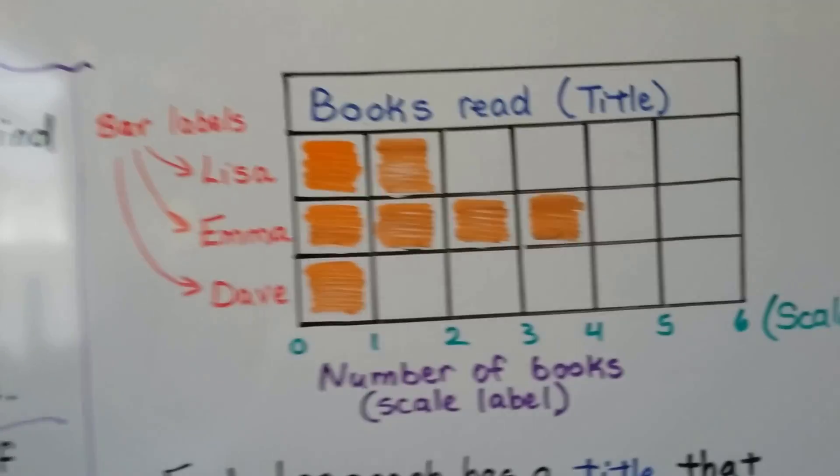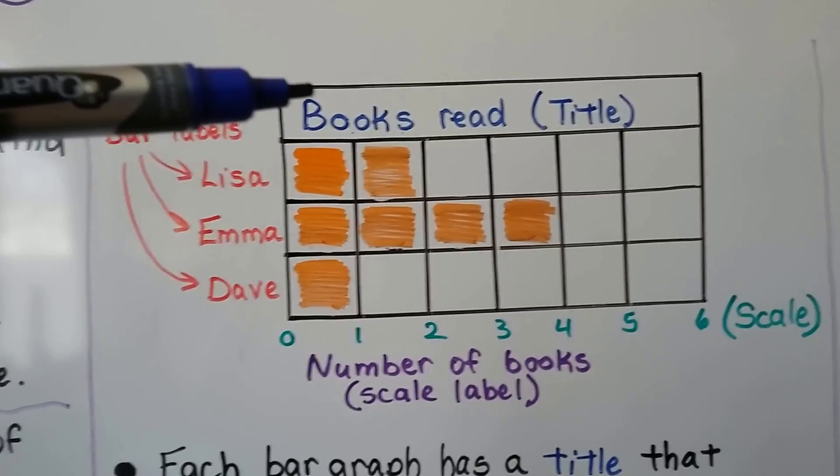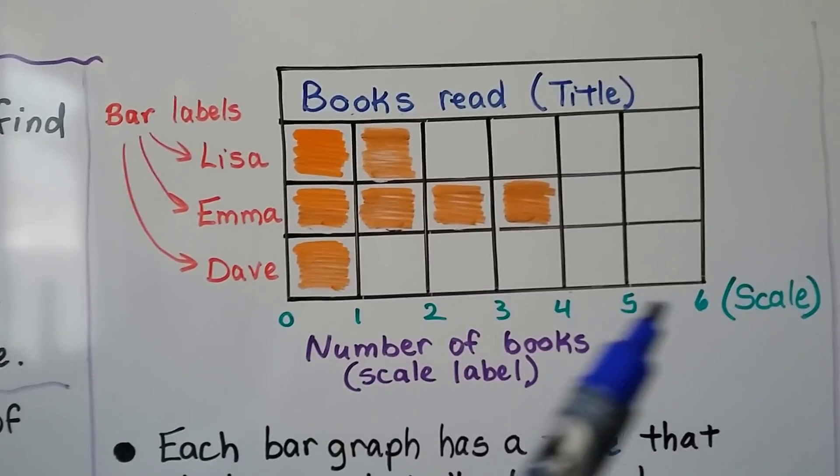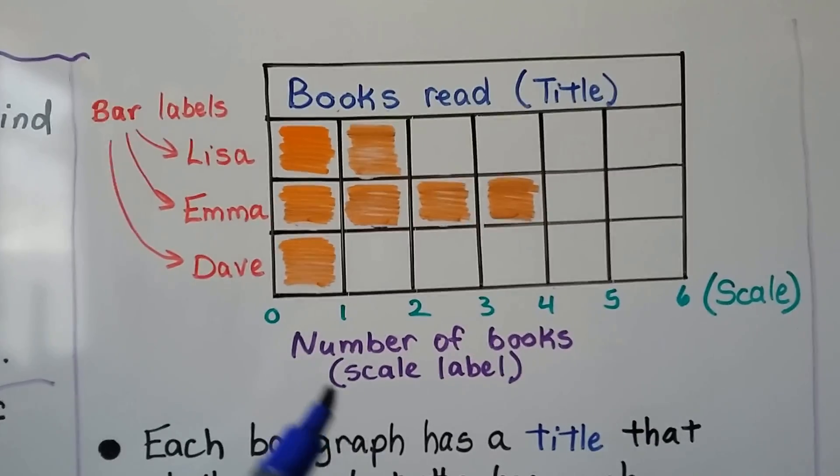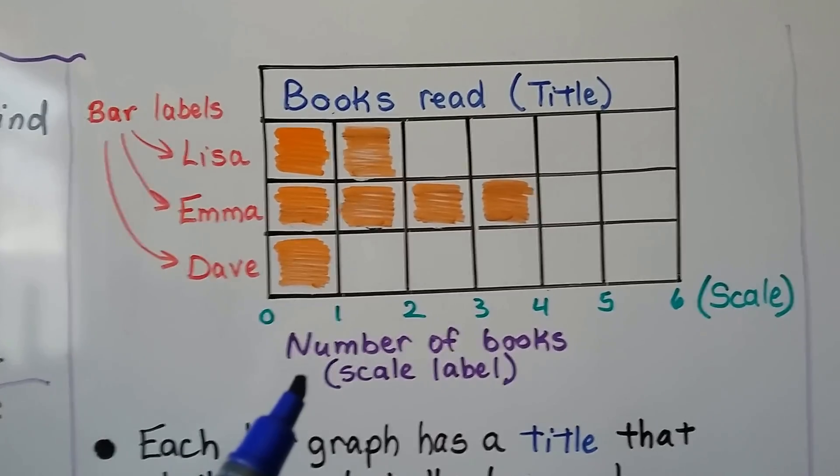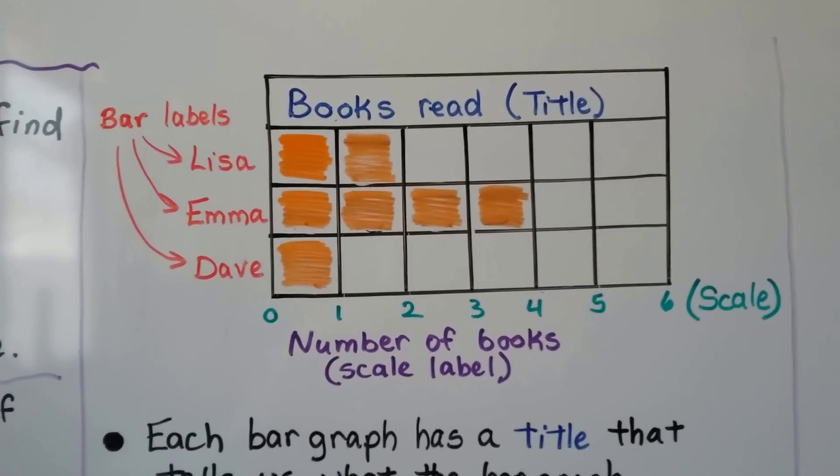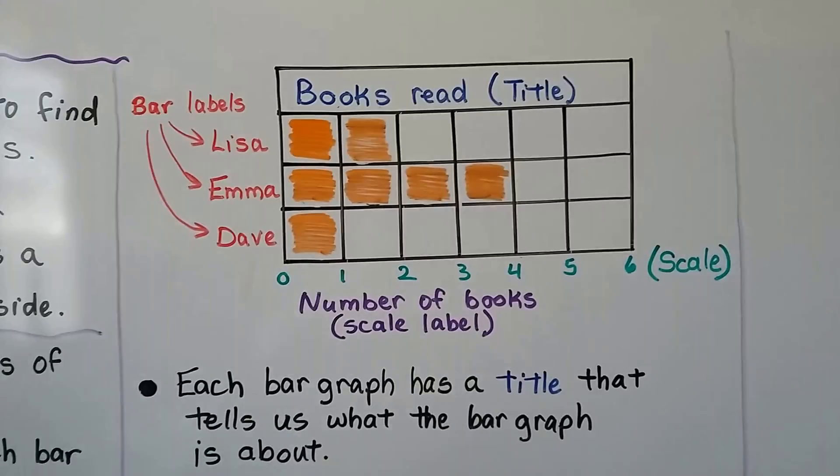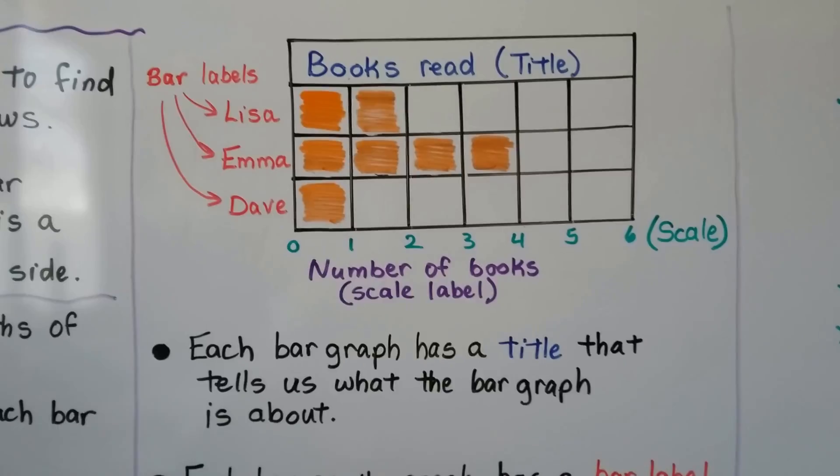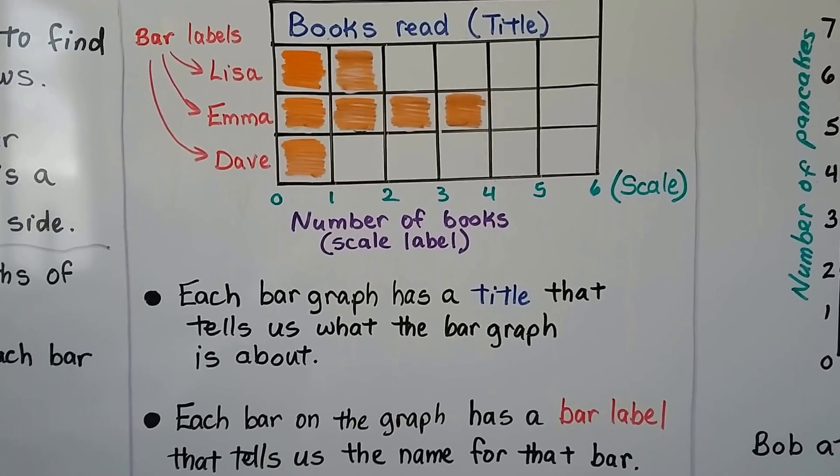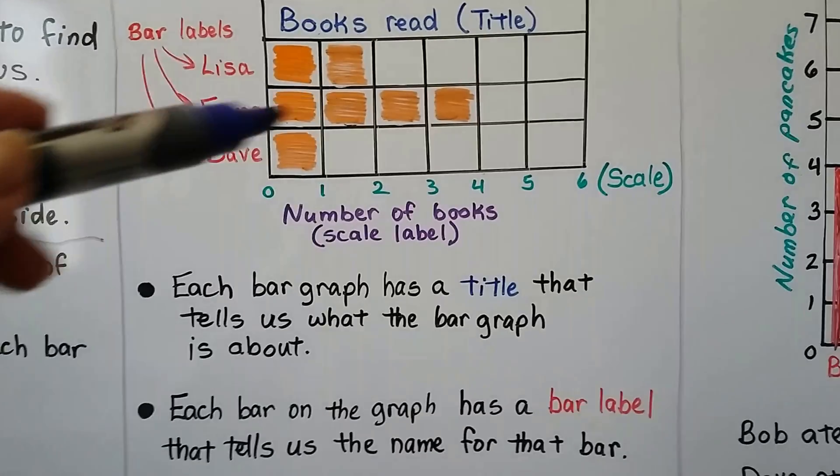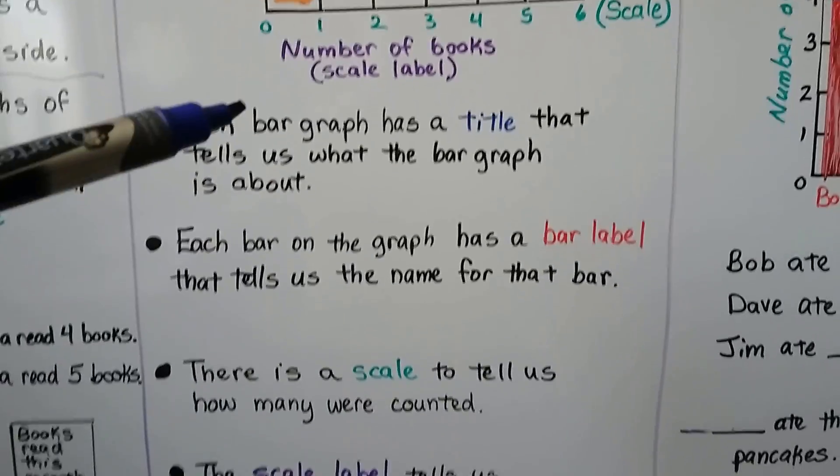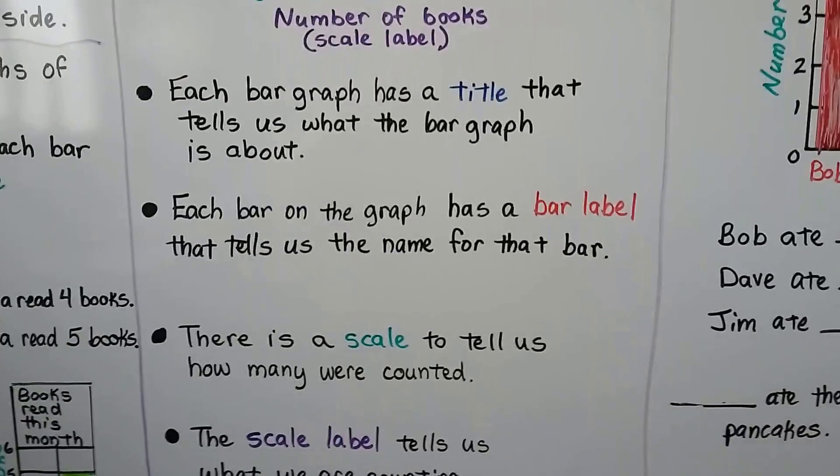The parts of a bar graph are the title—this is Books Read. The bar labels tell us the name of each bar. There's a scale and they're all different. This one goes from zero to six. They're evenly spaced. And this is the scale label. It's the number of books. Each bar graph has a title that tells us what the bar graph is about. Each bar has a bar label. There's a scale to tell us how many were counted, and there's a scale label that tells us what we're counting.